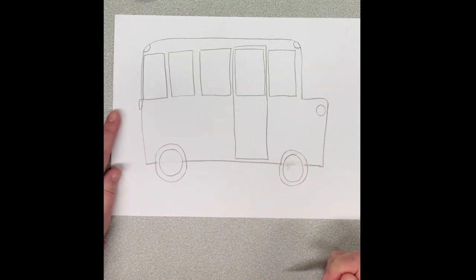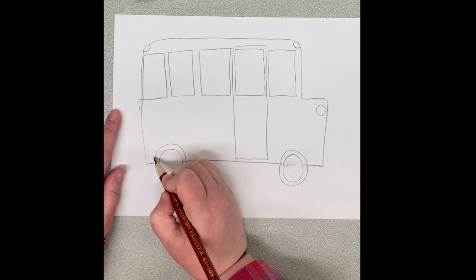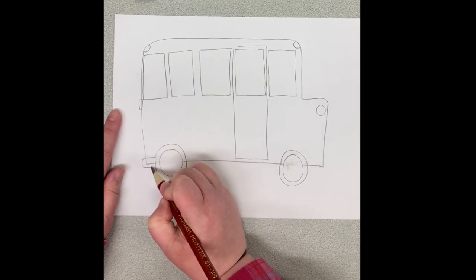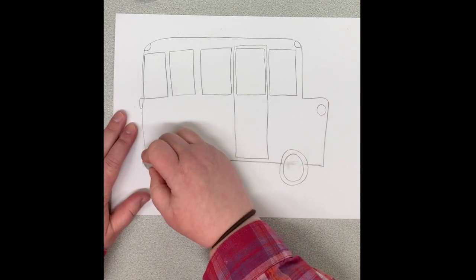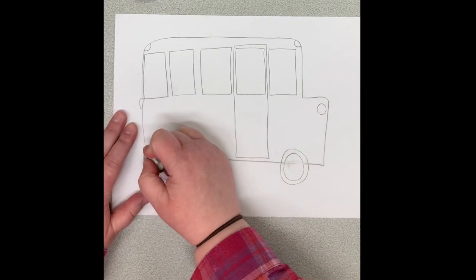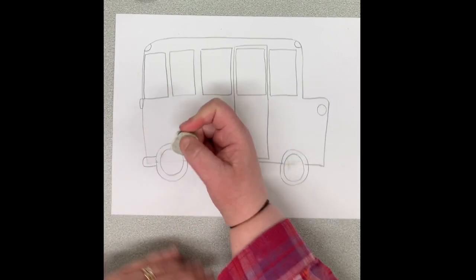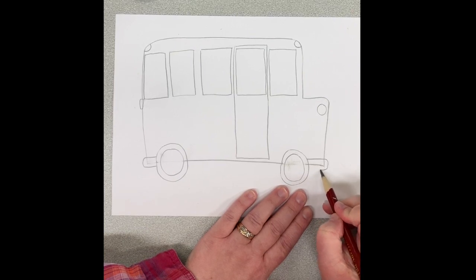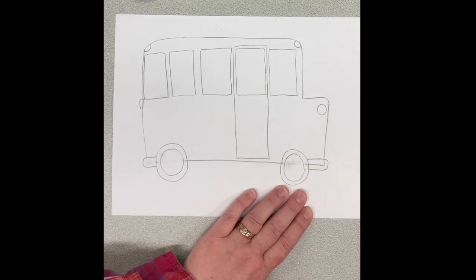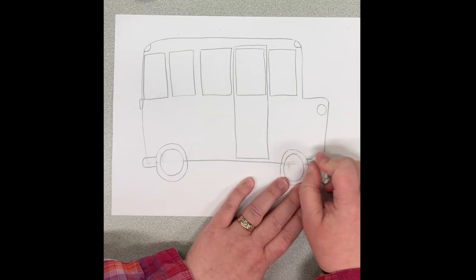Then we're going to add the bumpers, so you'll need to do a little bit of erasing for this part. Our bumper is going to come out like this, and then I erase this part in the middle. The same thing at the front, it's going to come out like this, and I erase this part in the middle.